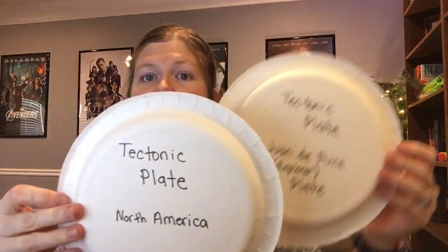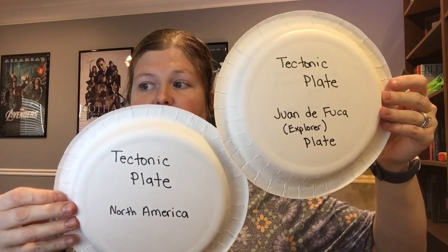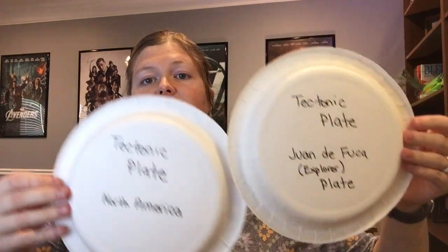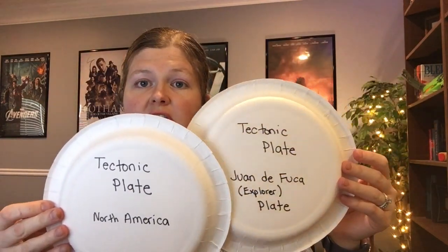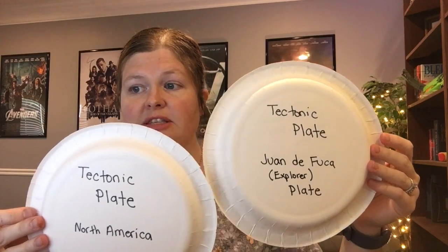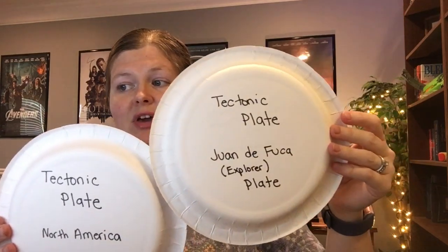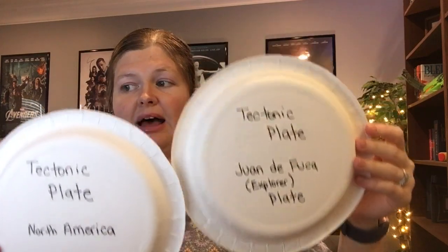Our crust is divided like a puzzle and it's made up of many tectonic plates that float along the earth's mantle. Sometimes these plates push together and they make mountains. Sometimes they all push in on the side of one location. Sometimes they slip by each other. All of these different movements are creating earthquakes, sinkholes, mountain ranges, and they open up the earth's crust for volcanoes to form.